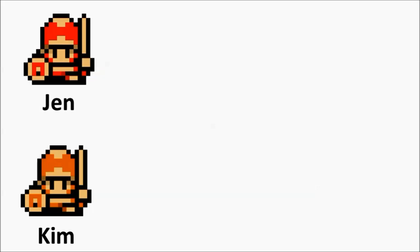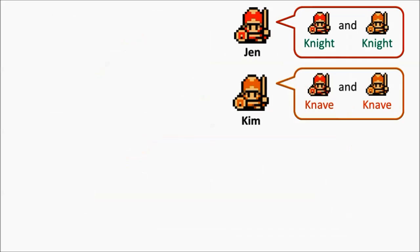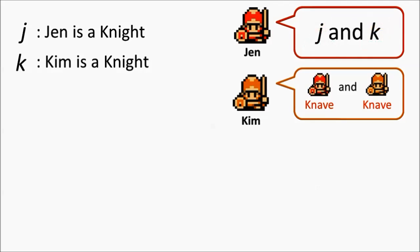Let's take a look at another example. Say we meet two other islanders, Jen and Kim. Jen says we are both Knights, while Kim says we are both Knaves. When Jen says we are both Knights, she is claiming the logical statement J and K. She is affirming both J and K are true at the same time.